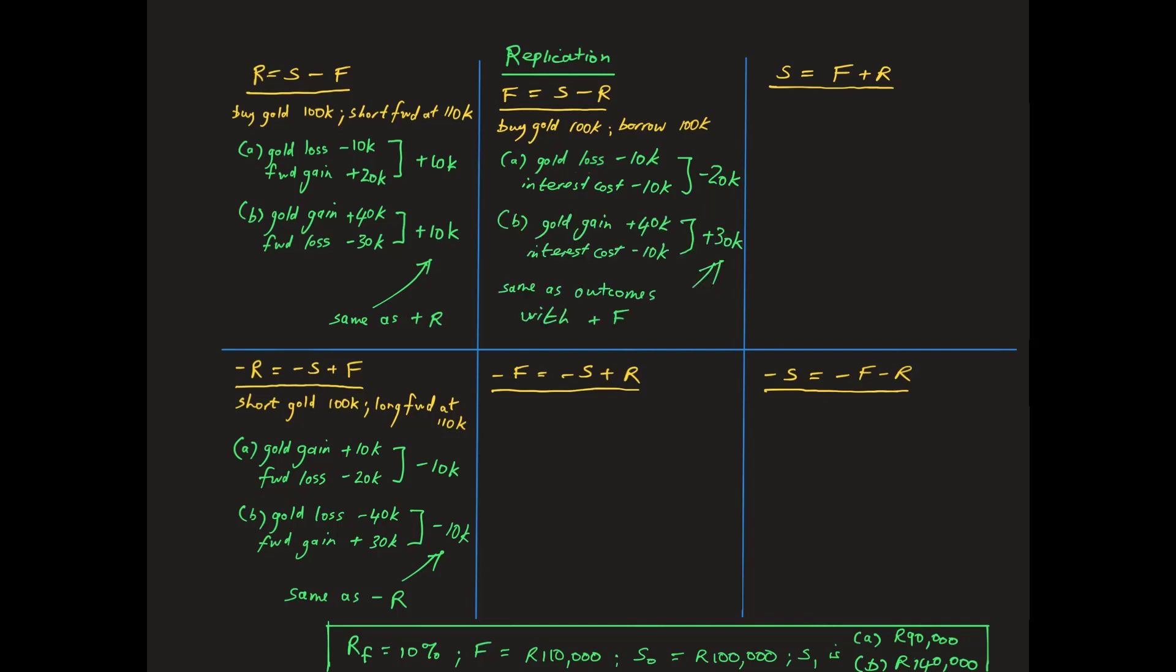In case B, where the gold spot price increases by R40,000, there is an equivalent gain for the gold holding, against which is offset the interest cost of R10,000 for a net gain of R30,000. Replication is confirmed because this is exactly what a long forward would have earned.